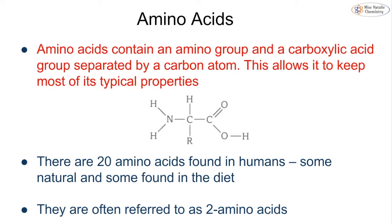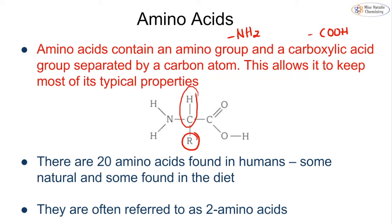So first of all, what is an amino acid? Well, an amino acid contains an amino group or an NH2 group and a carboxylic acid group or COOH, and they are separated by a carbon atom. Because they have this separation of this carbon atom, it allows these molecules to keep both their amine and their carboxylic acid properties. They all share this main structure and they differ in the R group that is attached to it.